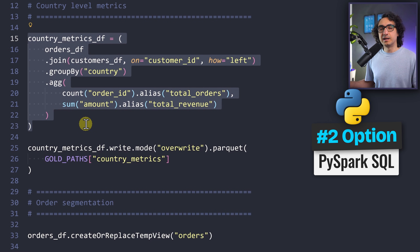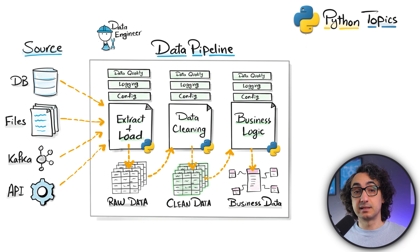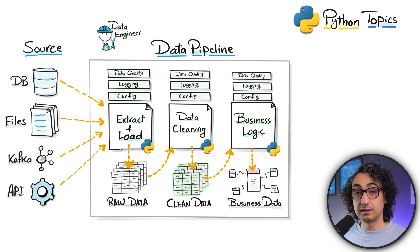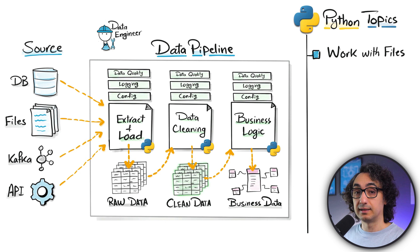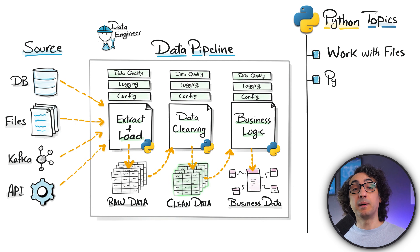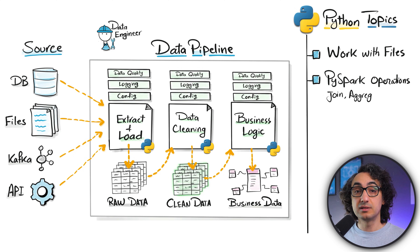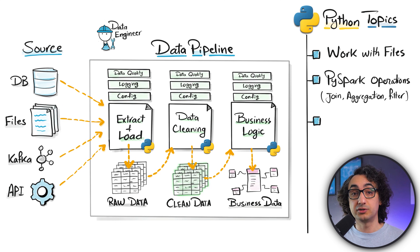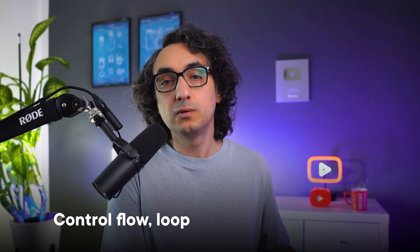You can use PySpark SQL inside Python, or stay with Python and PySpark without SQL — just join the data, aggregate it, and do simple logic. Recap of Step 3: learn how to work with files (read/write), PySpark for joins, aggregations, and filtering, basic Python aggregate functions (sum, count, average), SQL inside Python using PySpark SQL, and control flow, loops, and functions for complex logic.